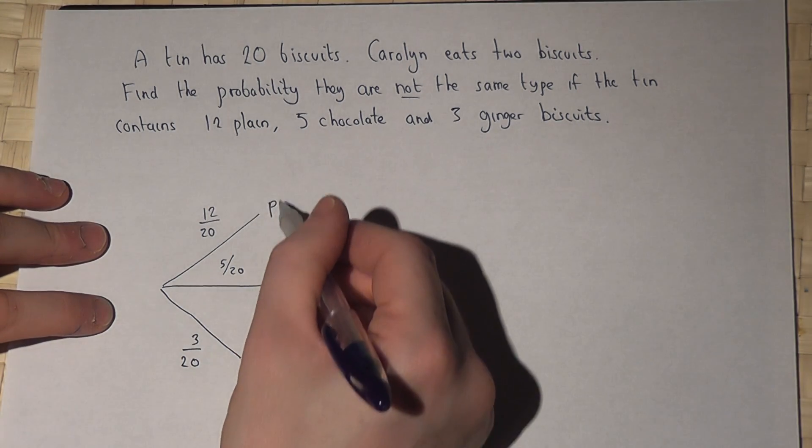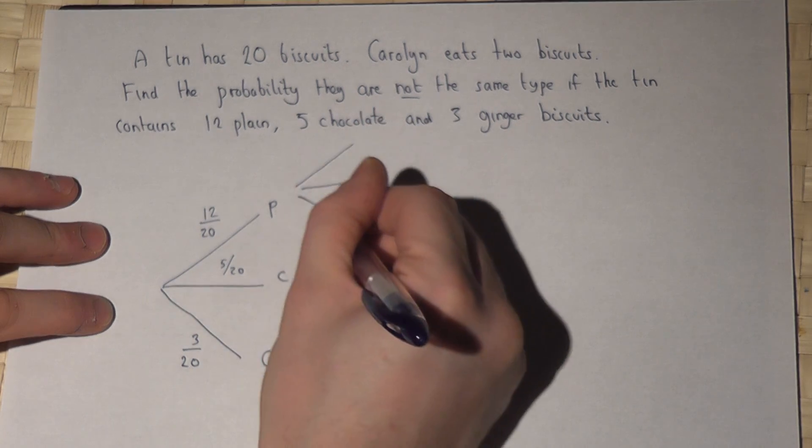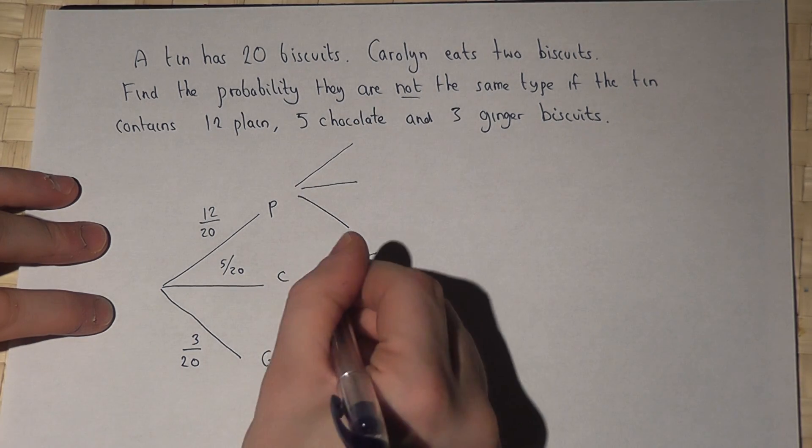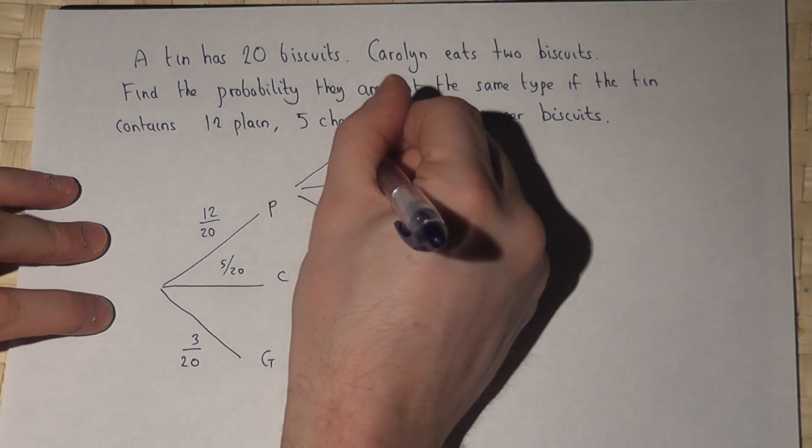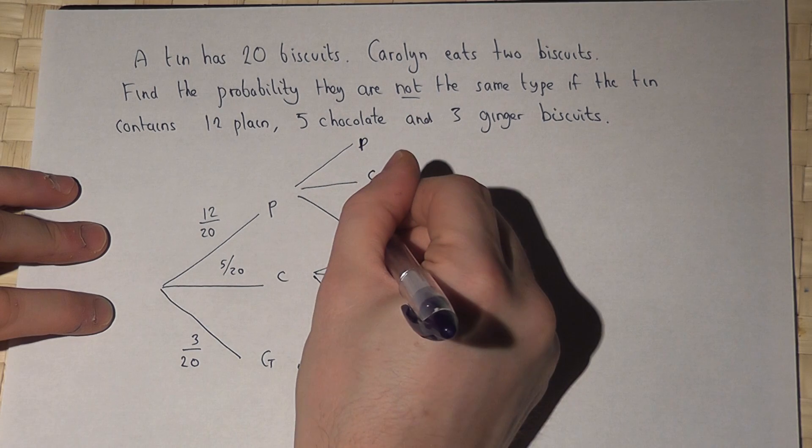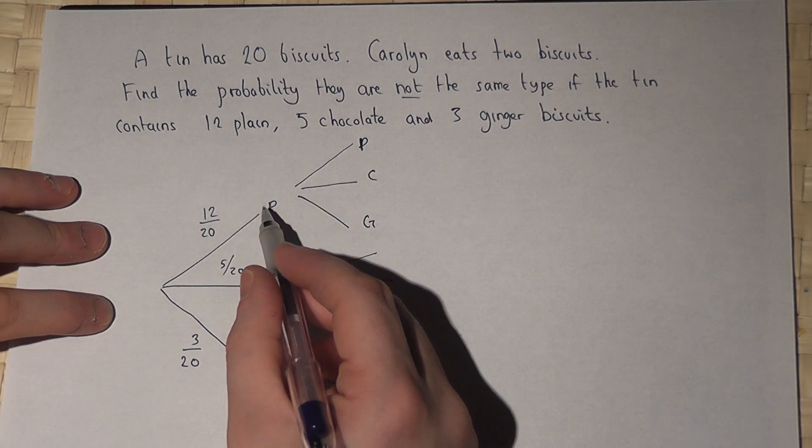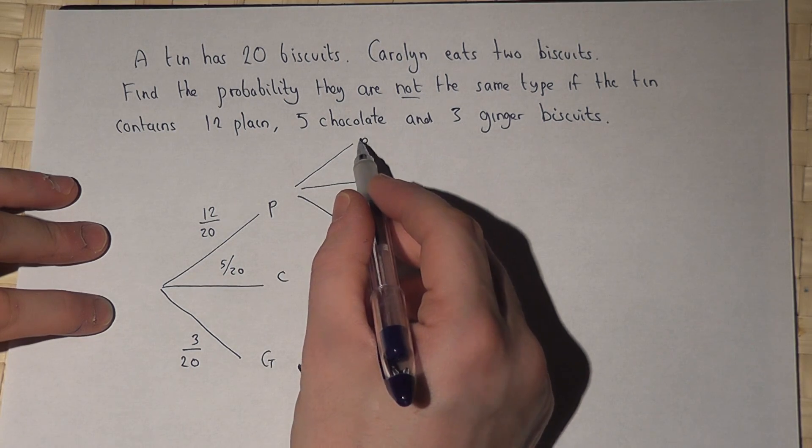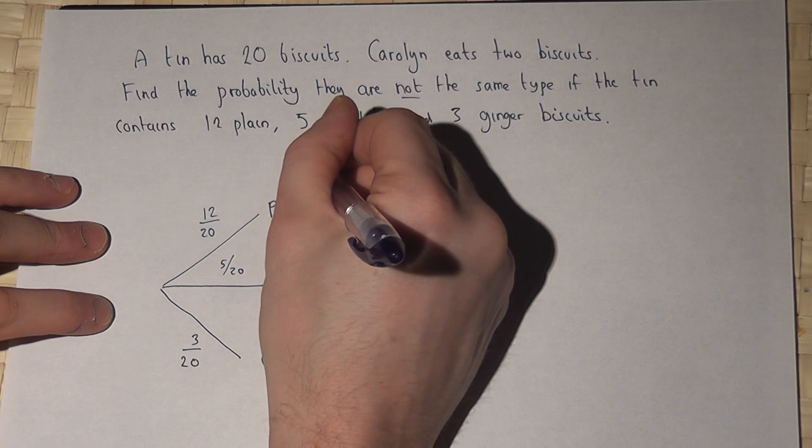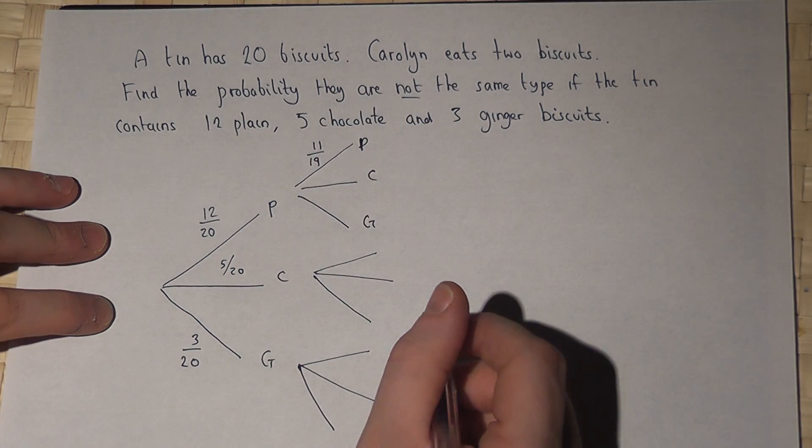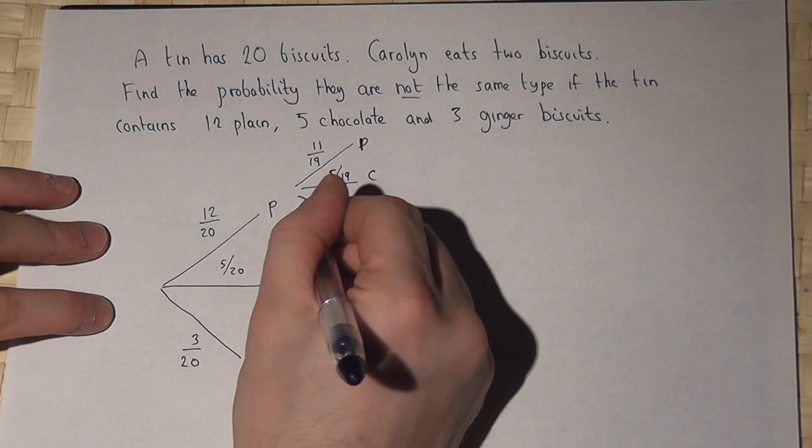So that's the first biscuit, but then she goes in for the second biscuit. If she got a plain biscuit first, when she goes in for the second biscuit, there are only 11 plain left out of 19. There are still five chocolates and still three ginger.